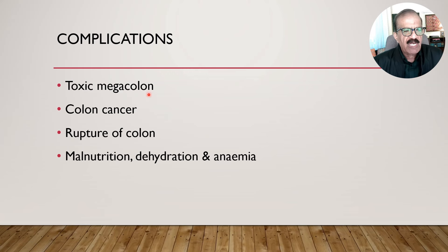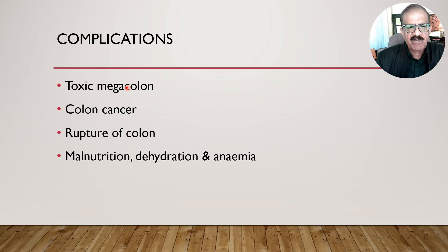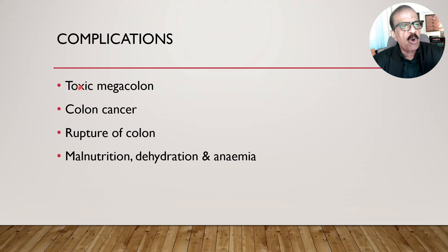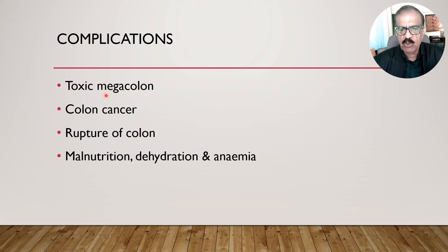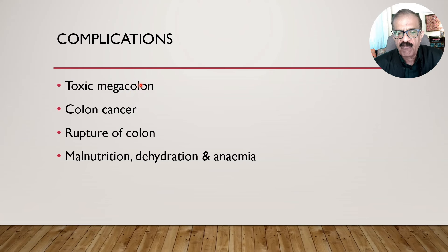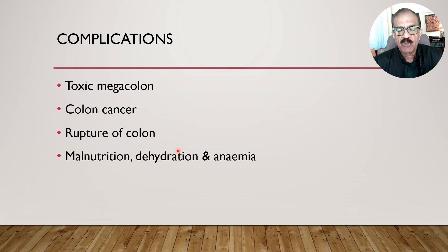Complications of ulcerative colitis include toxic megacolon — where more extensive, deeper inflammation affects the muscular layer and serosa, making the gut wall very weak and dilated. On X-ray abdomen, the colon is visibly dilated; barium enema should be avoided when toxic megacolon is suspected. Colon cancer is another complication. Rupture of the colon is possible. Malnutrition, dehydration, and anemia are also complications, in addition to the systemic manifestations already mentioned.